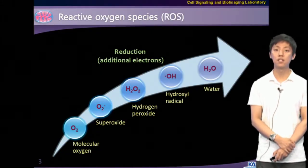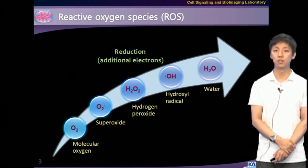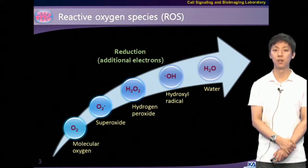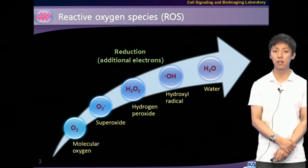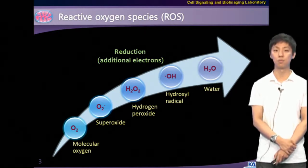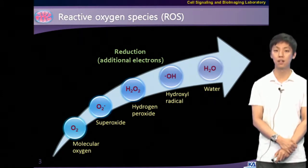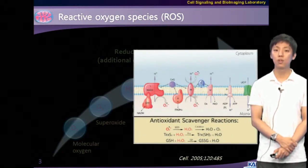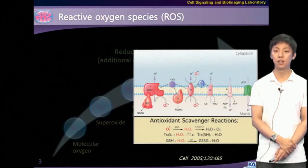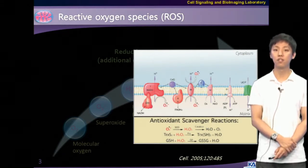Even under normal conditions, 1 to 4% of oxygen is reduced in mitochondria by one-electron reduction to generate ROS, specifically superoxide anion, which can further mediate oxidative damage to many intracellular components, including proteins, nucleic acids, and lipid membranes. To protect macromolecules from oxidative modifications, cells have developed antioxidant defense systems.